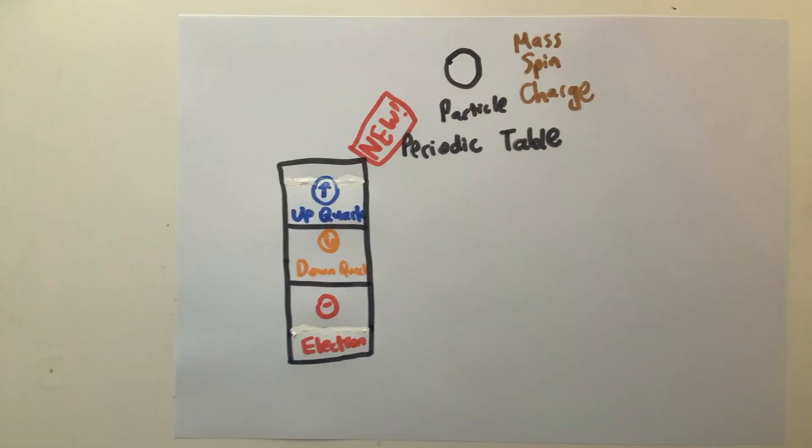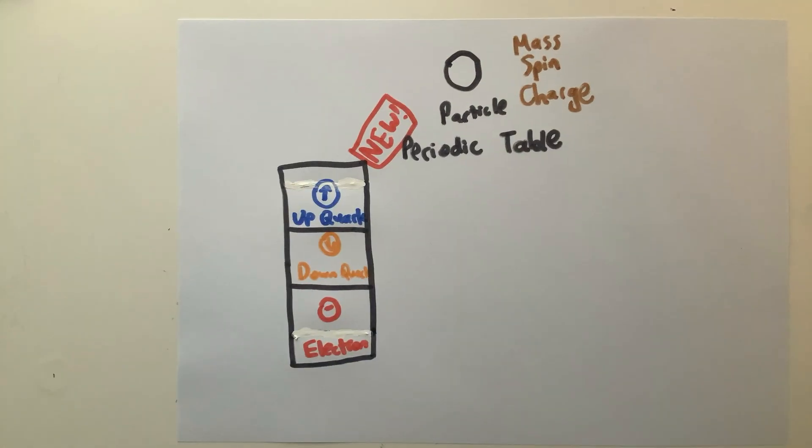All elementary particles have three basic properties that define them: their mass, spin, and electric charge. Think of them as the fingerprint of each particle. So this is what our new periodic table of fundamental particles should look like. Except it isn't.